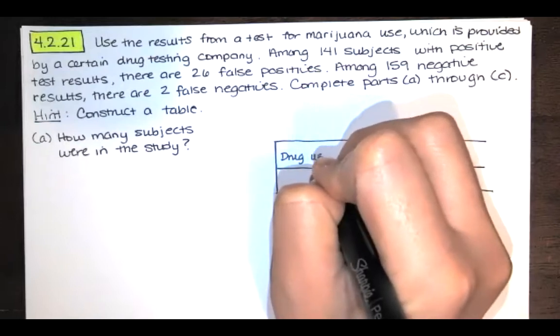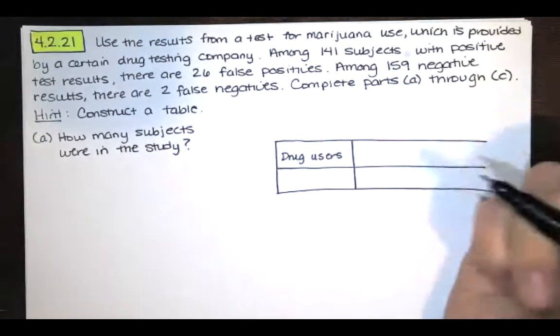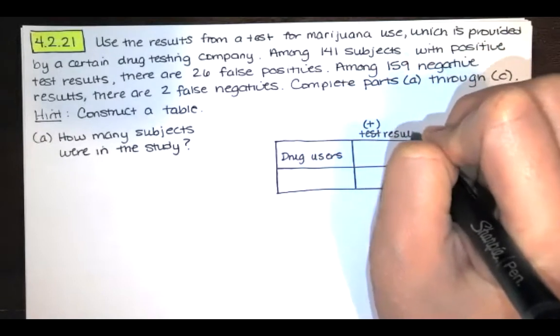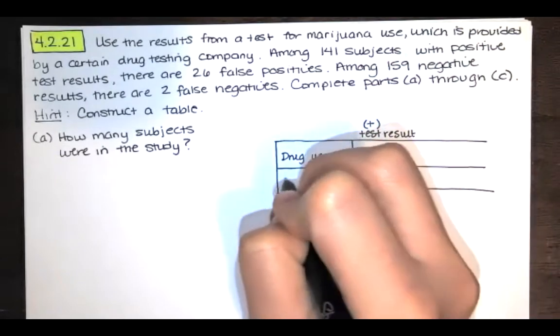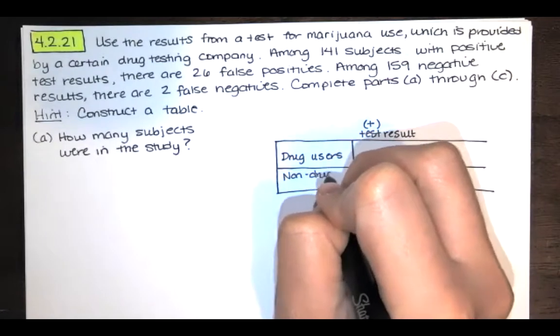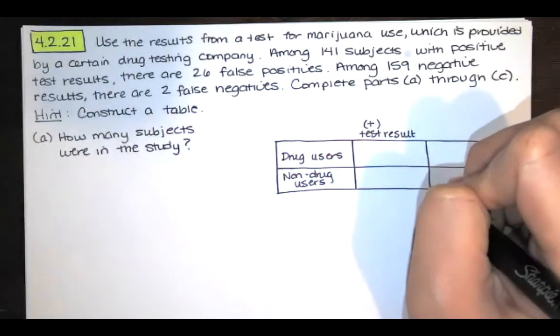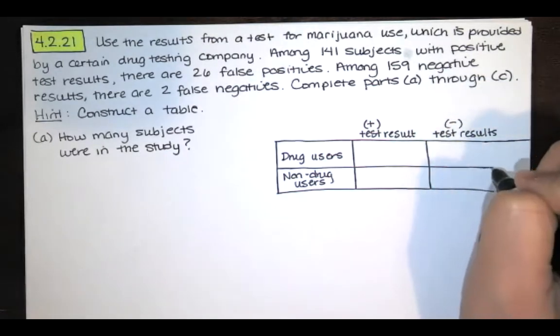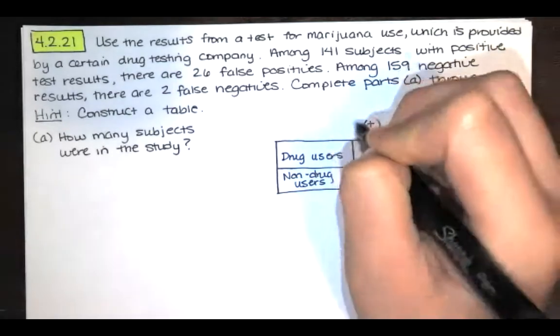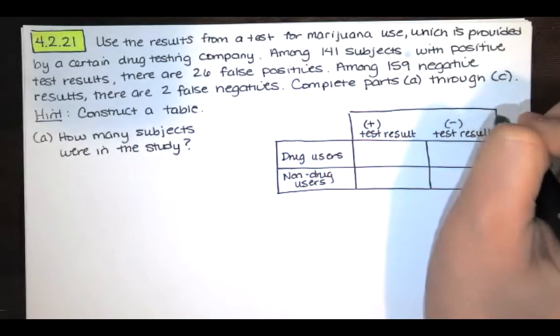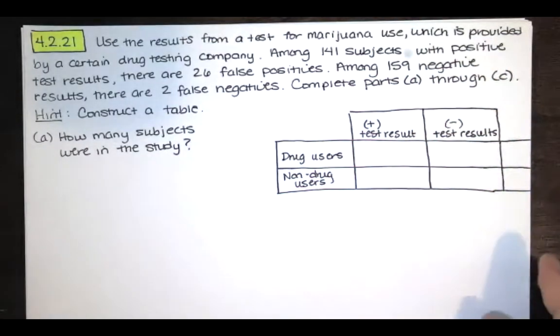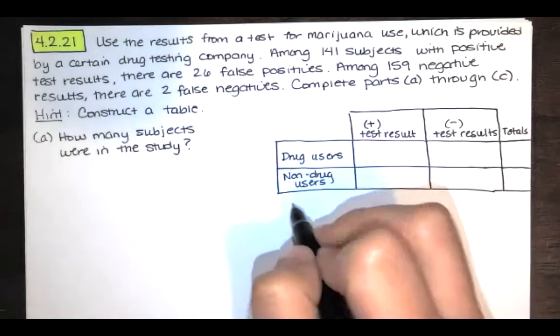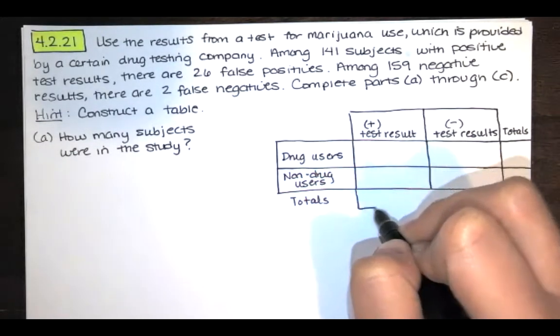We're going to construct a two-by-two table. So let's say that in this row, we're talking about people that actually use drugs, and then in this column, we'll have positive test results, and in this row, we'll have people that do not use drugs, and in this column, we'll have negative test results. Now typically, when you've got your two-by-two table like this, many people like to put totals for each row and totals for each column.